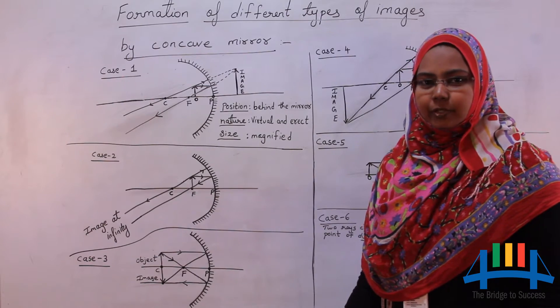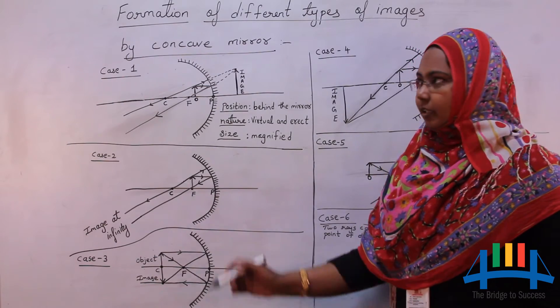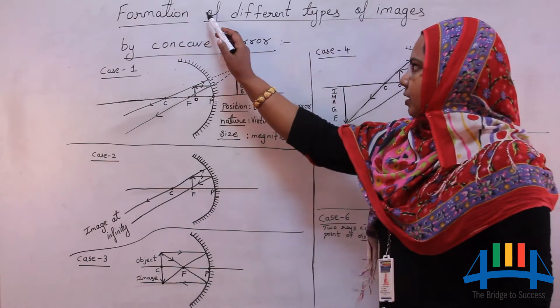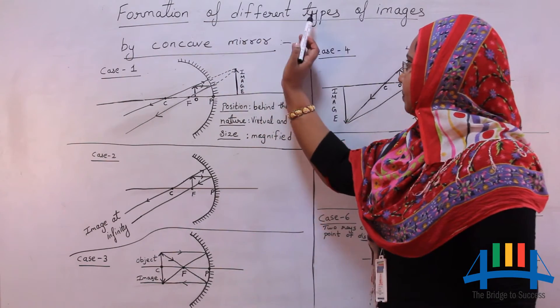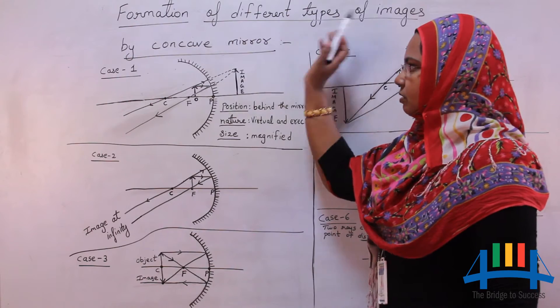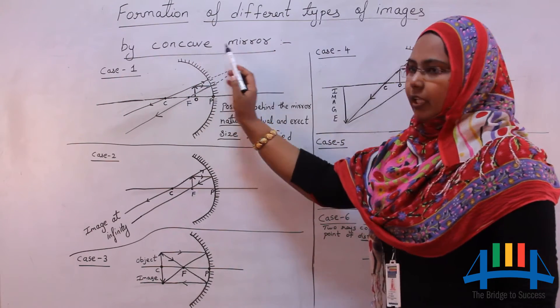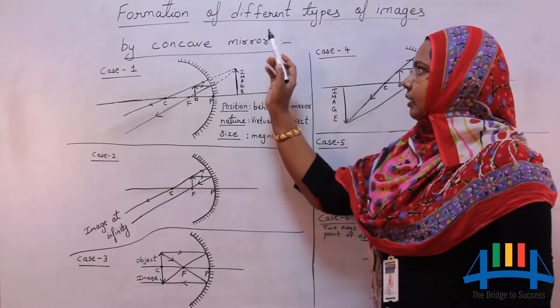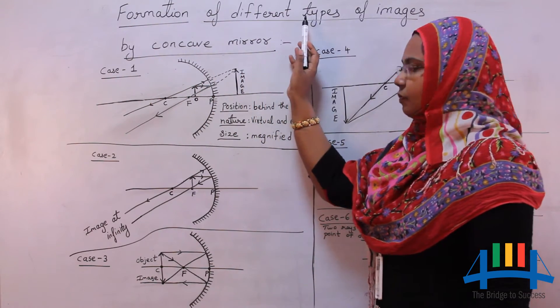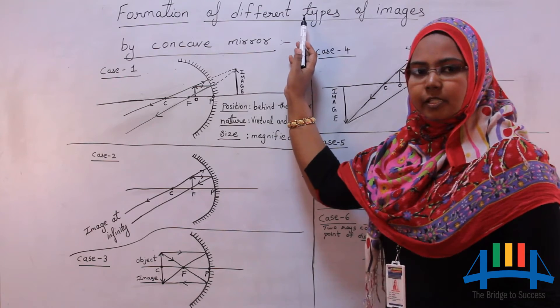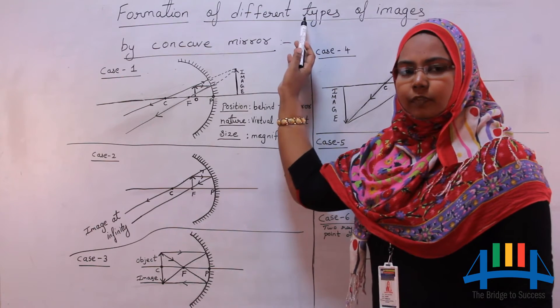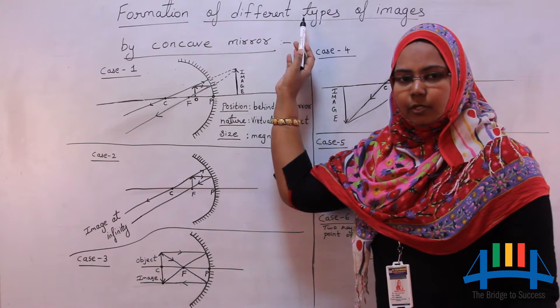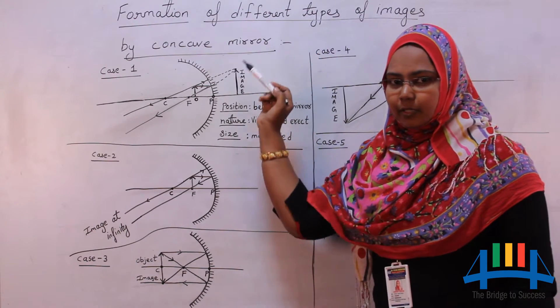Hello friends, today we are going to discuss about formation of different types of images by concave mirror. The type of image formed depends upon the position of the object in front of the concave mirror.